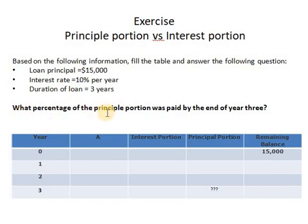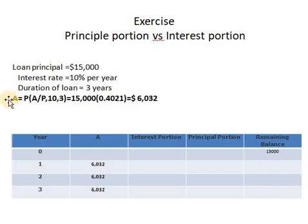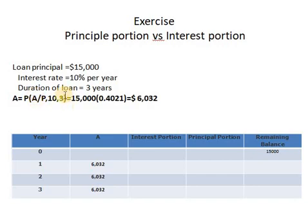I'm asking what percentage of the principal portion was paid at the end of year three. The first step is calculating the annuity — the annual amount you will be paying each year. Using the equation A equals P times (A/P, 10%, 3), where the principal amount is the loan you took, you get this value from the table, giving an annuity of $6,032. This is the amount you are going to pay at the end of each year.